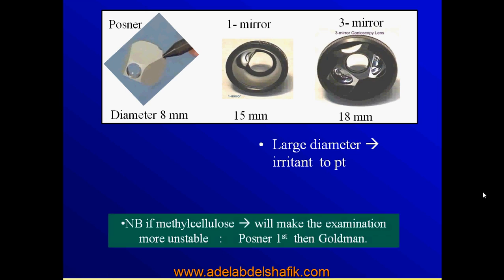Keep in mind: if you are going to use both the Posner and the Goldman, it is better to start with the Posner because we don't need any viscous agent. If you reverse the situation and start with the 3-mirror, the viscous agent used with the 3-mirror will disturb you while doing the examination with the Posner.